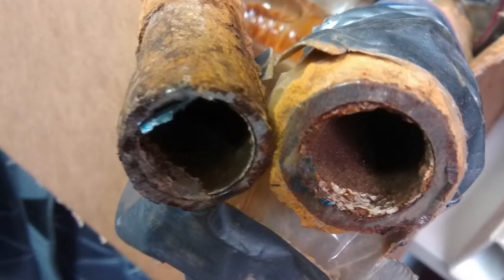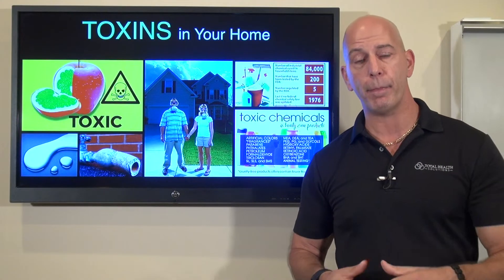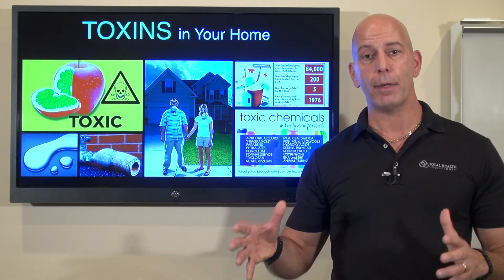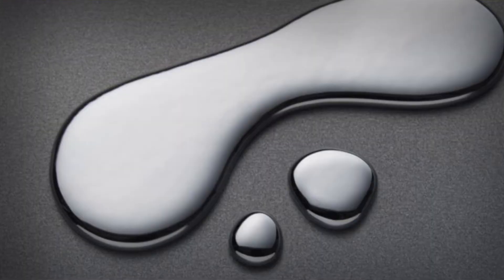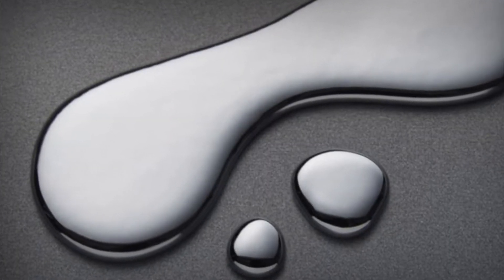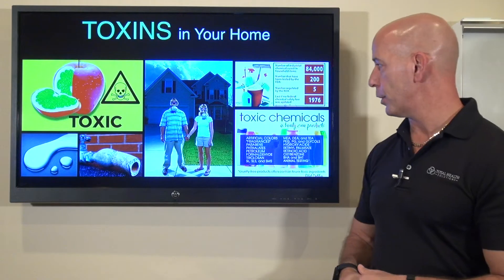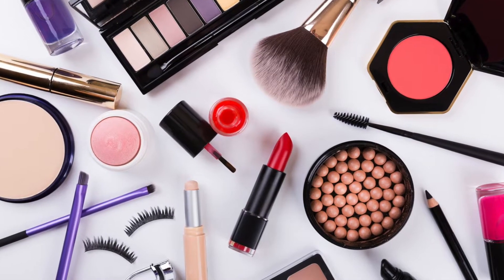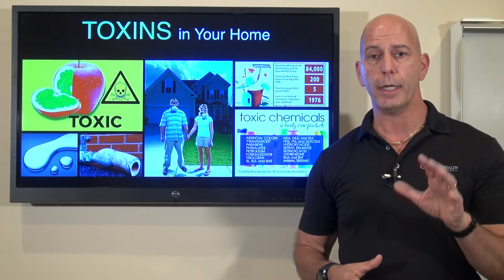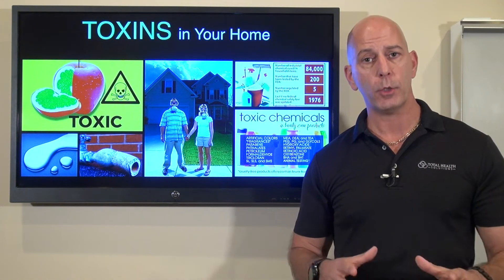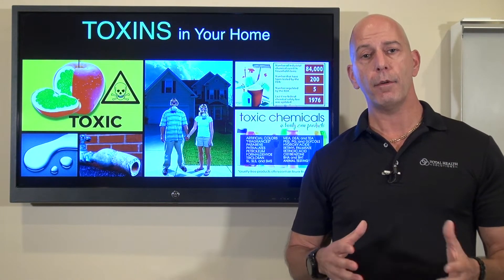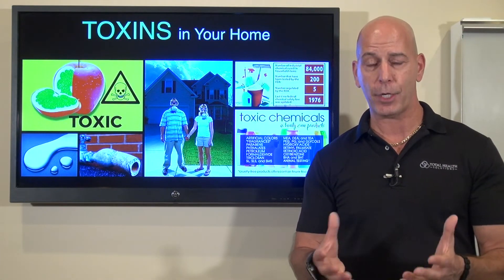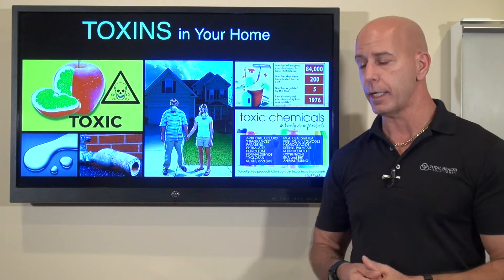Look at what happened in Flint, Michigan with lead pipes, and then we started seeing this all over the country with some cities having even higher levels of lead in their water. You also want to stay away from mercury toxicity. Your chemicals in your beauty supplies are also horrible — lots of chemicals in those products. Ladies, make sure you're using more natural products that don't have so many petrochemicals, coming from oil or gasoline.